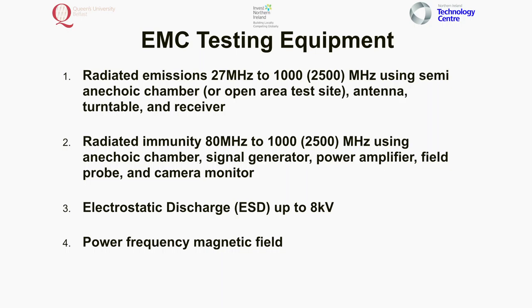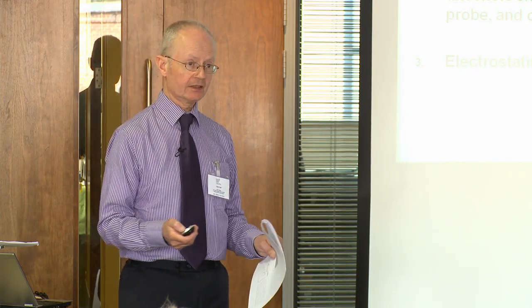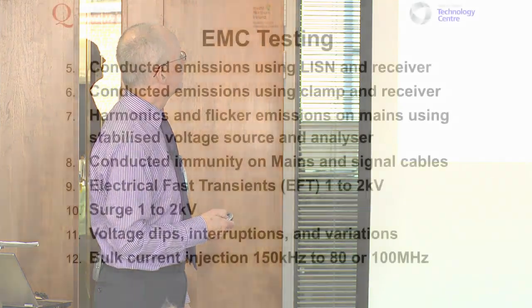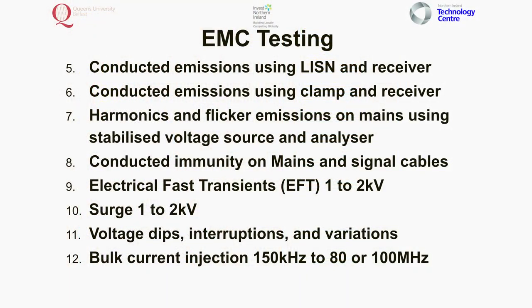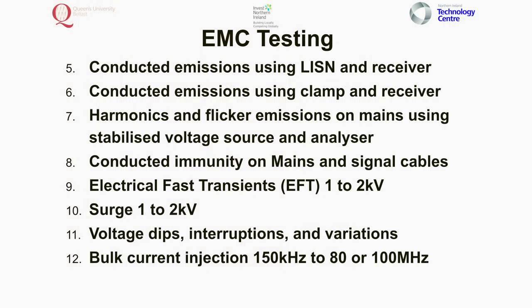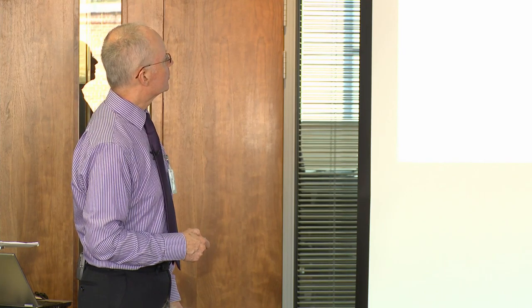There are something like 12 tests a product might have to be subjected to. Battery-powered equipment might only require three, but if it's mains powered it could be 12 tests. Radiated emissions cover the frequency range from 27 MHz to 1 GHz; the basic standard is now up to 2.5 GHz, and for some standards the requirement is to go up to five times the highest clock frequency — which could be up to 6 or even 12 GHz. Testing uses a semi-anechoic chamber or open area test site, with the antenna, turntable, and receiver.